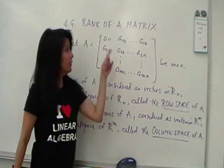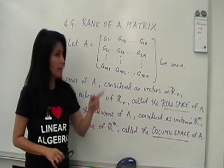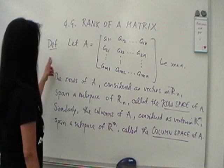All right, the last section in chapter 4, 4.9, talks about the rank of a matrix. So this is the last section for real vector spaces. Let's look at what this definition tells us.